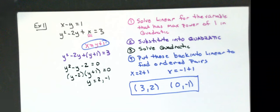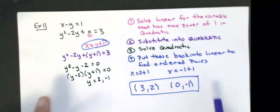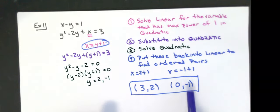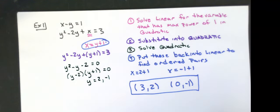Remember, your answer to systems of equations is — if the graphs do intercept — you need to give them to me as points, ordered pairs. You can't just give me x's and y's, because there are multiple combinations of how 3 and 0 could pair up with 2 and negative 1. You actually have to tell me which ones match up with which.